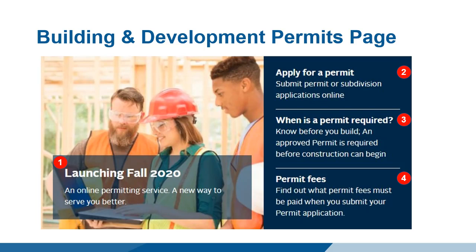From the Building and Development Permits landing page, you can: 1. Click on Launching Fall 2020 to open a page dedicated to information about the launch of the customer portal. 2. Select Apply for a Permit to learn more about the application process. 3. Select When is a Permit Required to learn more about permits. 4. Select Permit Fees to learn more about how fees are calculated. This page also includes links to Nova Scotia Building Code regulations, right-of-way information, and a Contractor's Desk link. The Contractor Desk will eventually close as the customer portal is established.